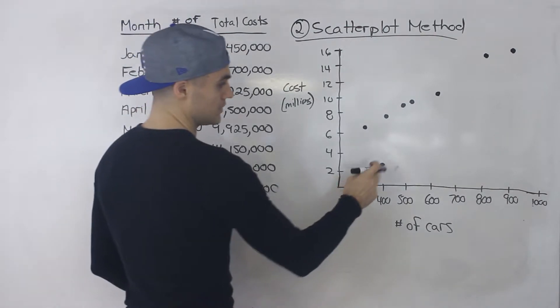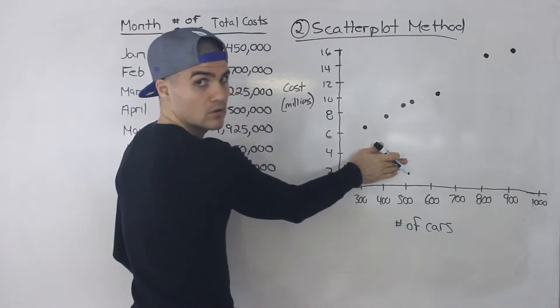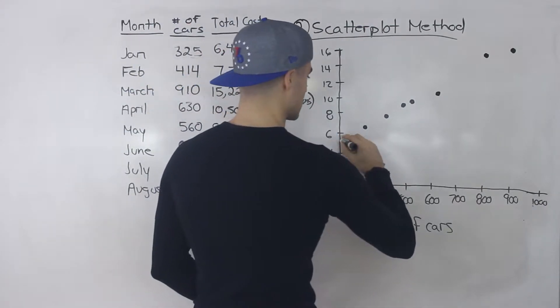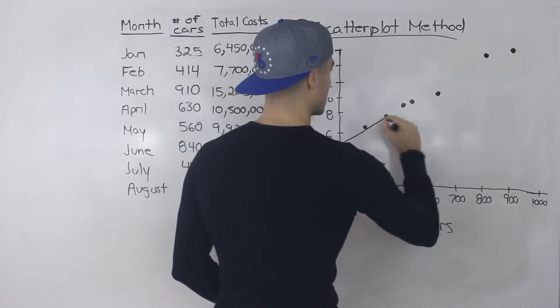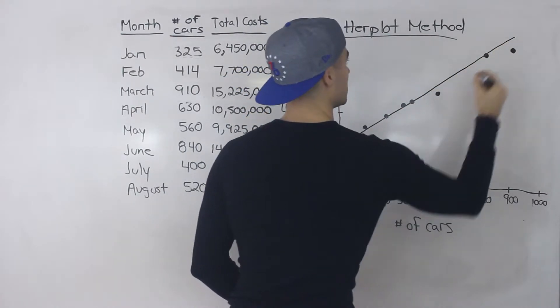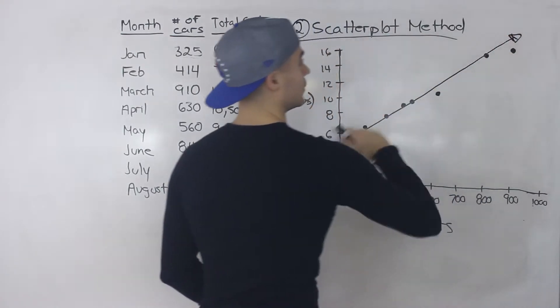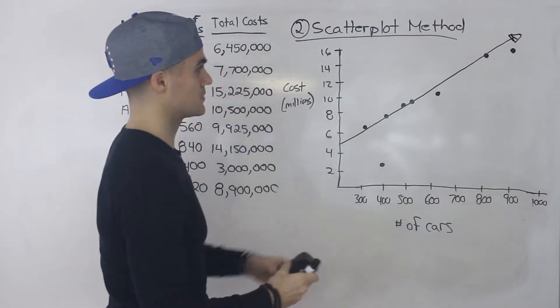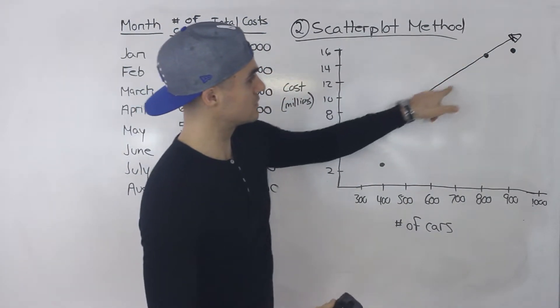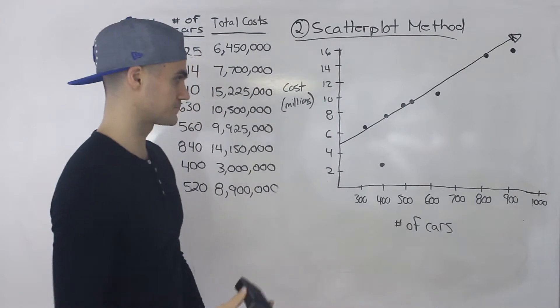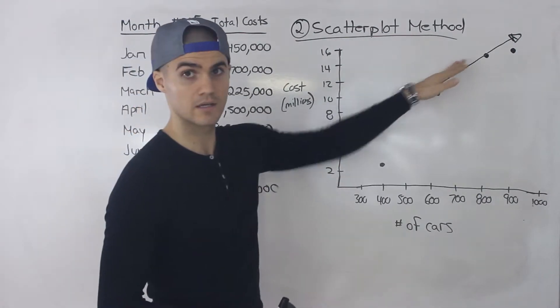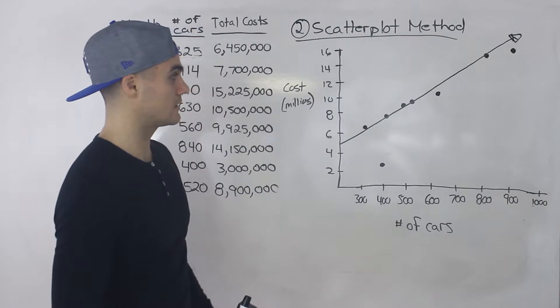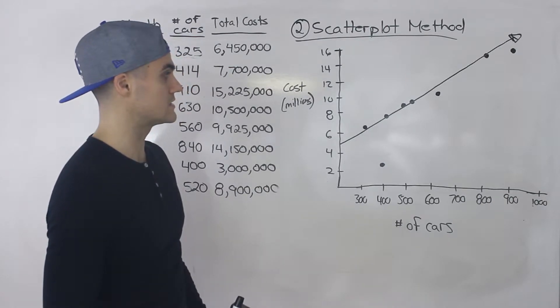So what you can do is you can maybe even ignore this outlier when you're making this line. So if I make this line here maybe it looks something like that going through most of the points. Maybe it should be a little bit more slanted to go through these points a little bit more. But yeah you just make basically the best line that you can that goes through the data.